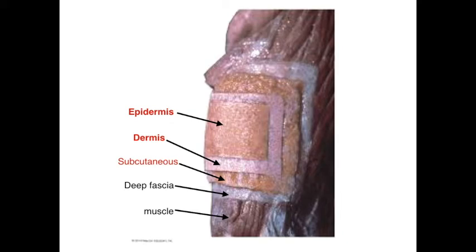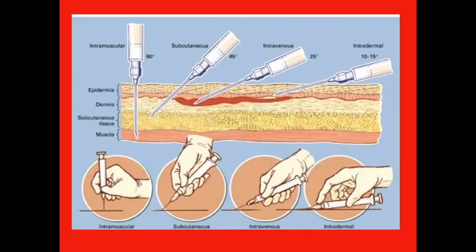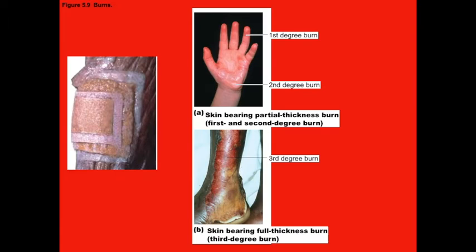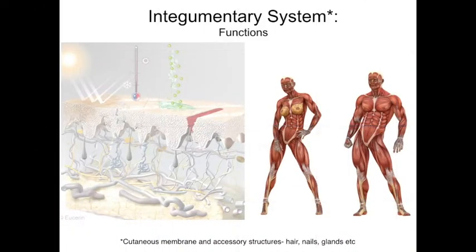Each of these layers is going to perform specific functions. They have different properties and unique clinical, social, and cultural implications. Understanding the layers of skin and their properties is important in many clinical applications. As we cover the specific layers and accessory structures, we'll go into more detail about which component carries out each specific function.